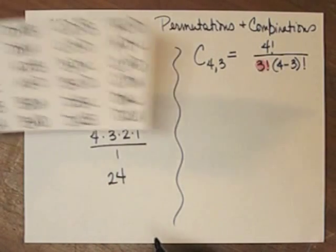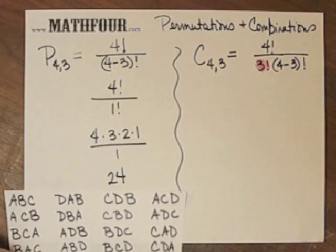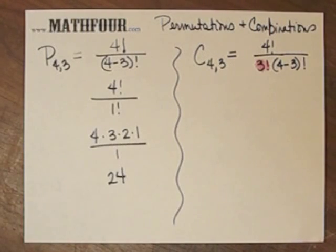Well, if I went through and counted these, or just looked at them, I would notice that there are indeed 24 different permutations.